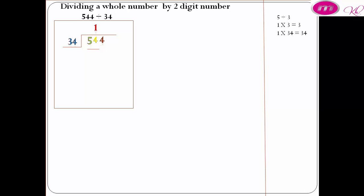1 above the last digit on the right, which is 4. 1 times 34 equals 34. 54 minus 34 equals 20. 20 is less than 34, so we are in the right way.